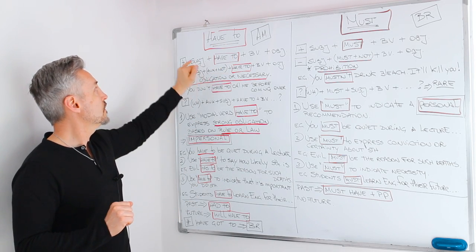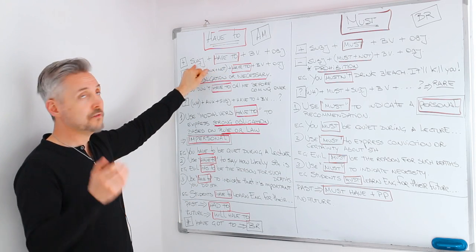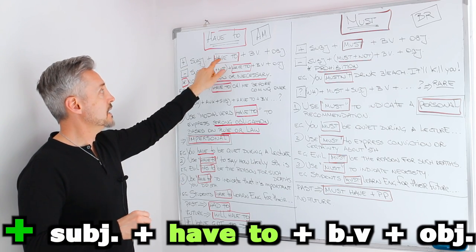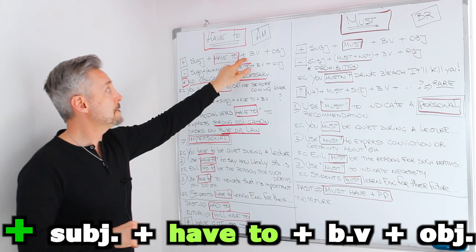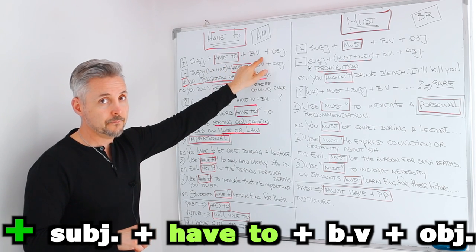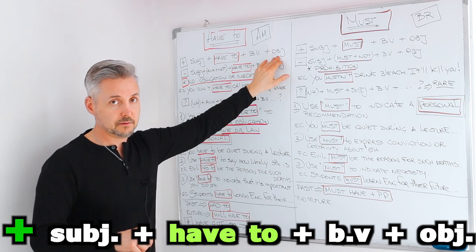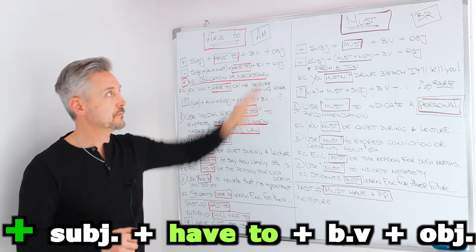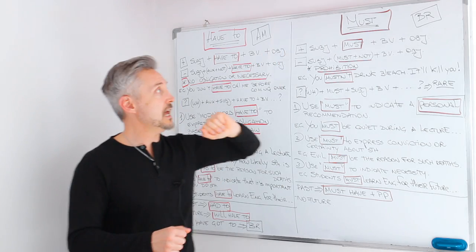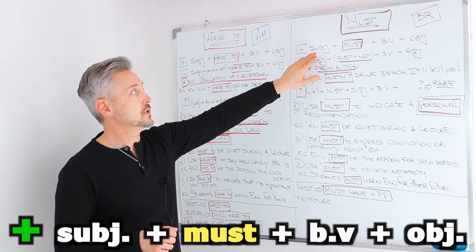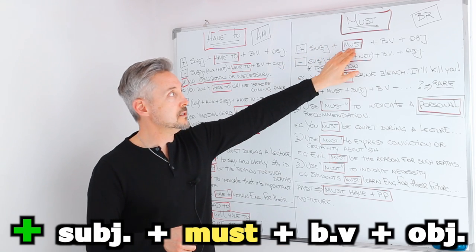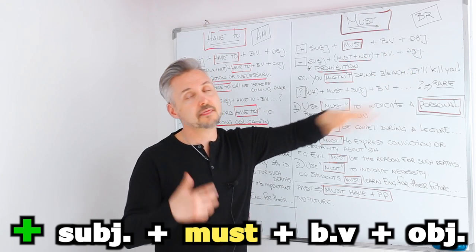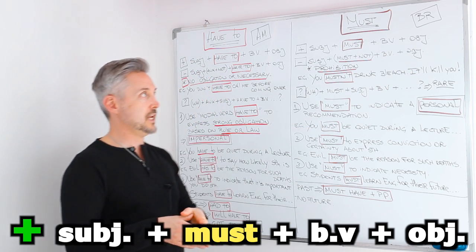With have to, the positive sentence follows the formula: subject plus have to, plus the base of the verb, plus the object, and then the time expression, if any. With must, the formula goes: subject plus must, plus the base of the verb, plus object, and then the time expression, if any. Remember that with must, we don't need to — this is one thing to remember.